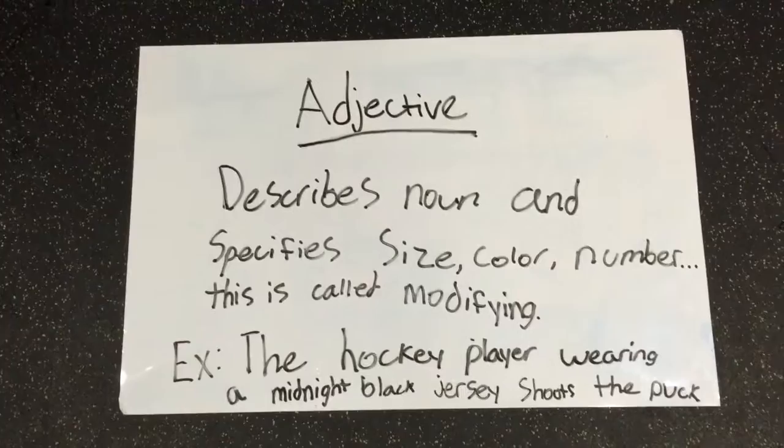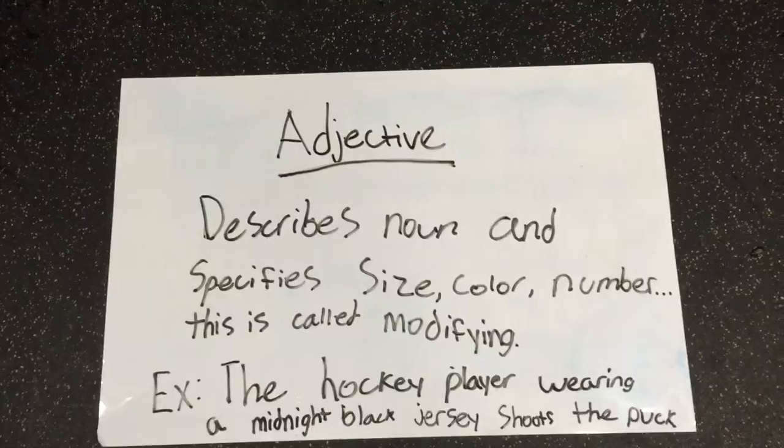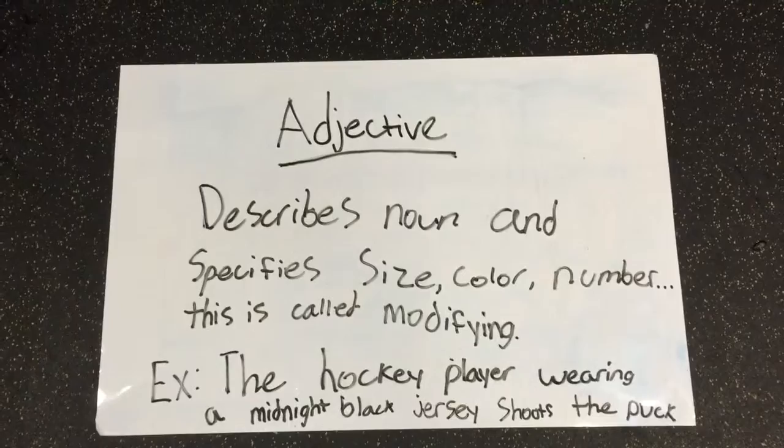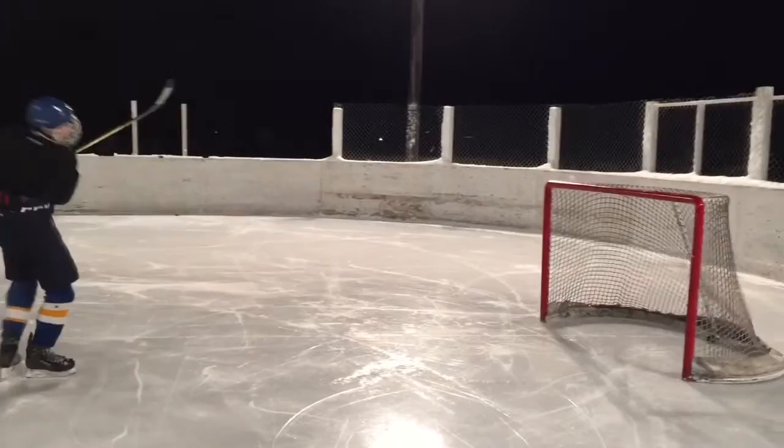An adjective describes a noun and specifies things like size, color, number, etc. This is called modifying. An example would be: the hockey player wearing a midnight black jersey shoots the puck — midnight black being an adjective.